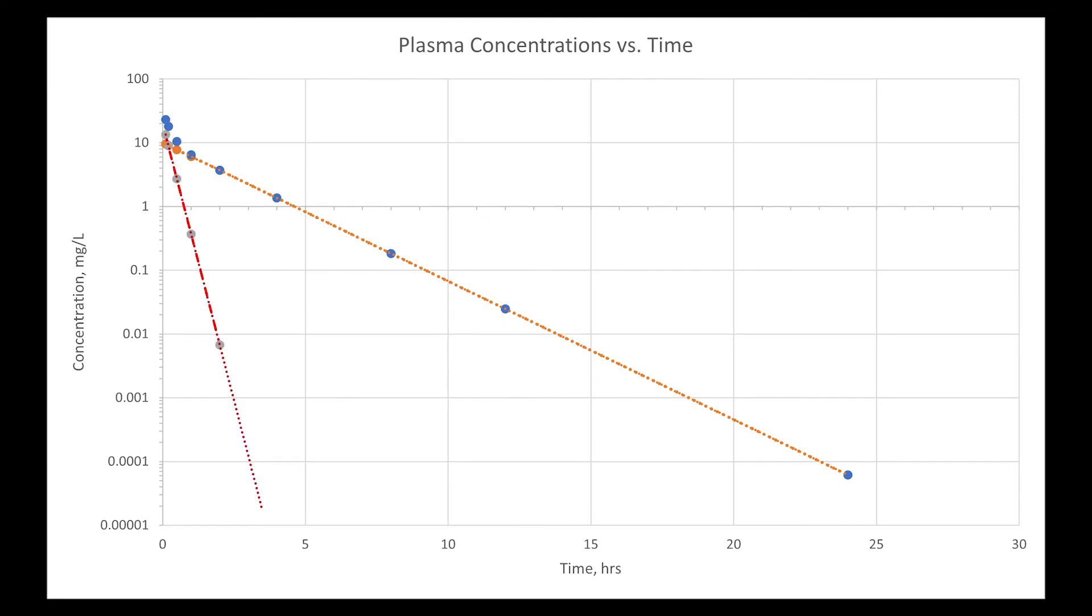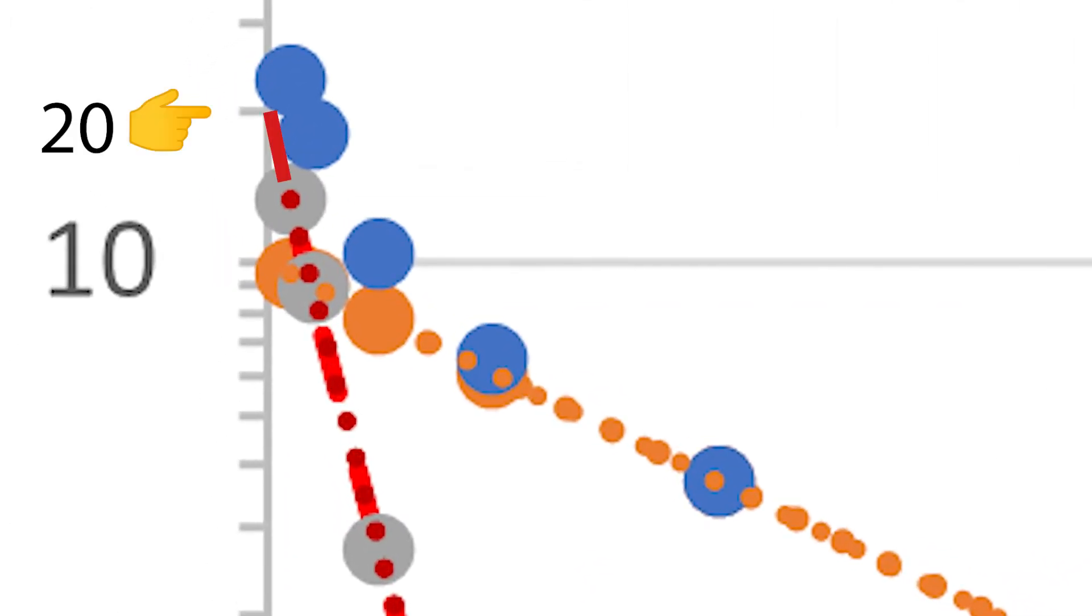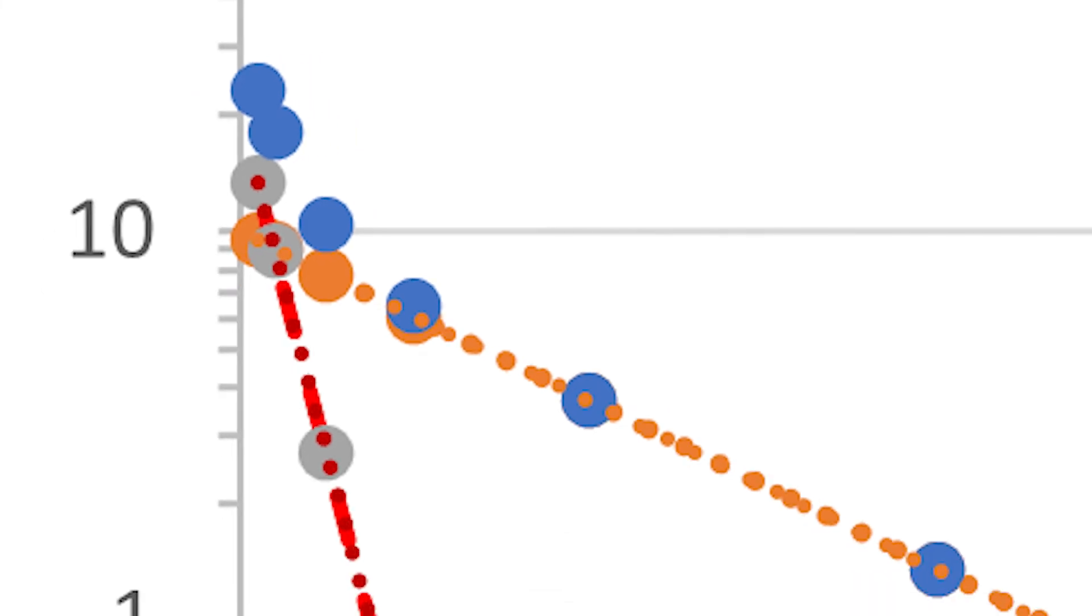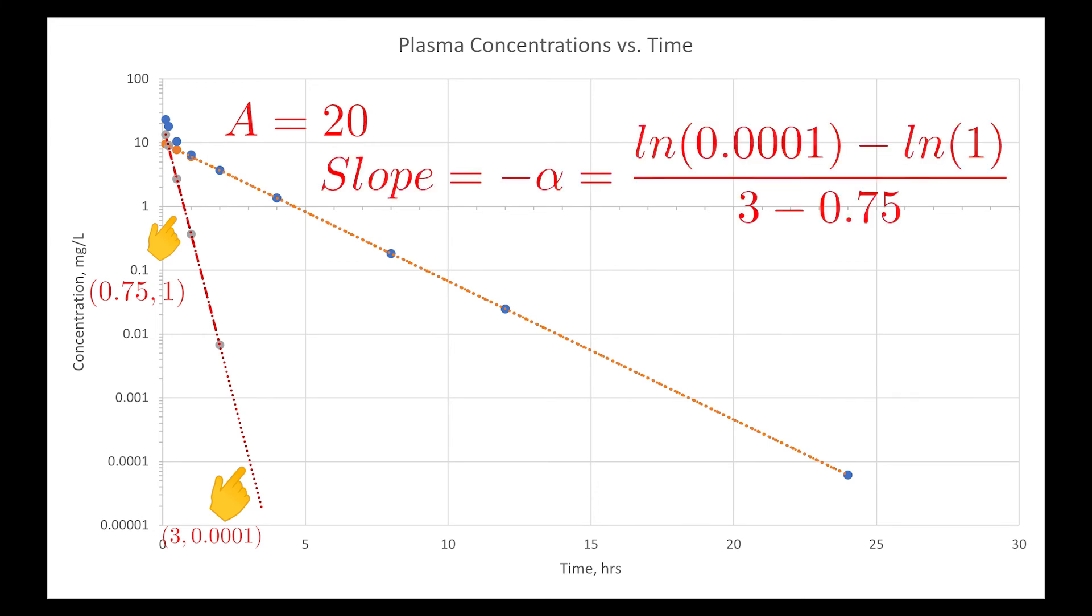We can then draw our best fit and then we can zoom in to find our y intercept of about 20. The slope we'll calculate using the points 0.75 comma 1 and 3 comma 0.0001, and this gives us a slope of negative 4.09348 which is about negative 4.1 and that would be alpha.